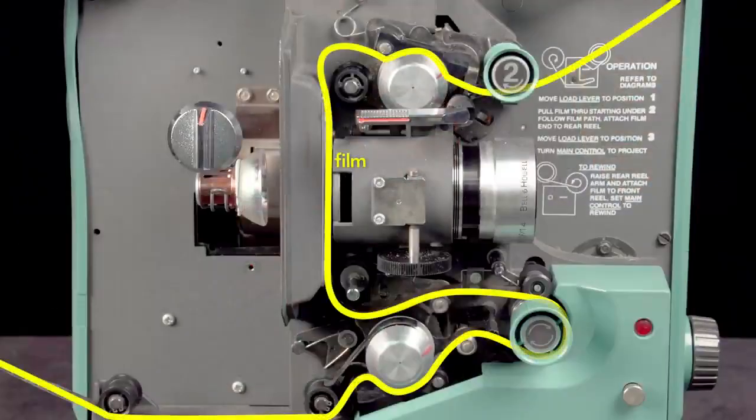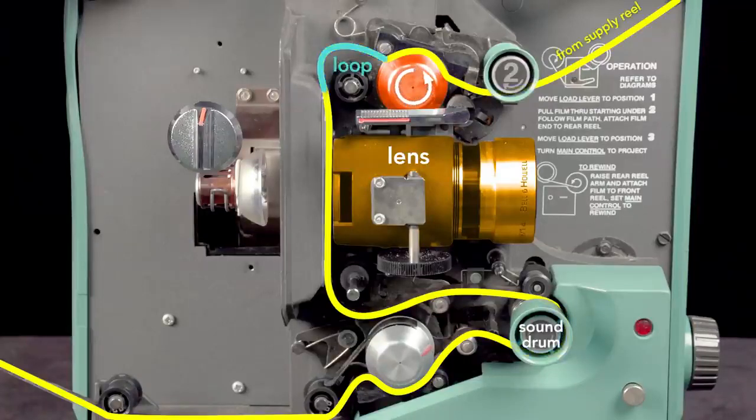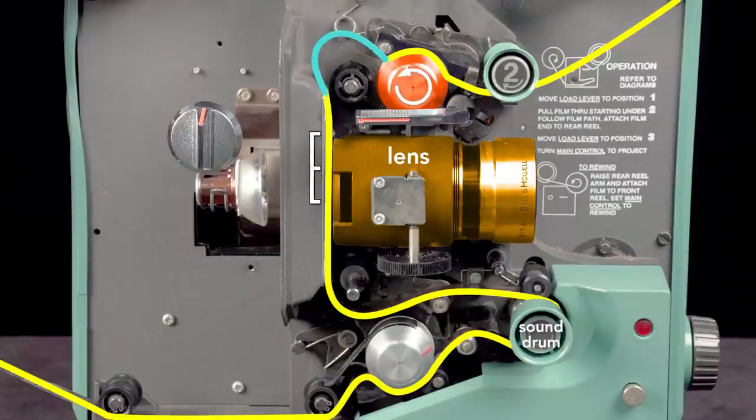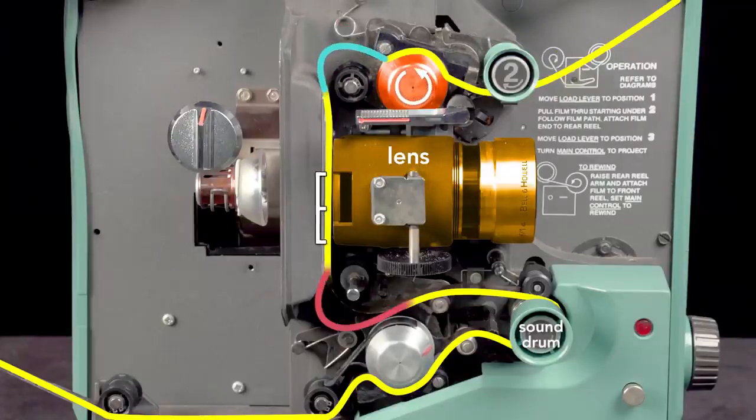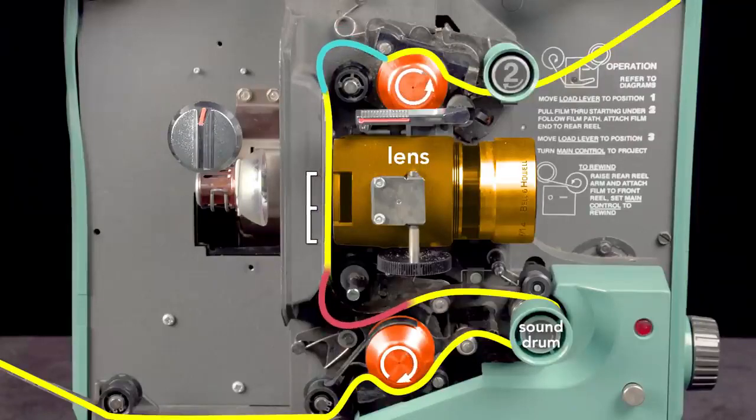The film must pause in front of the lens to project without blur, but must also move continuously for the proper playback of the sound. The top sprocket pulls the film from the supply reel continuously. A loop of slack film starts to form. This slack allows the shuttle to quickly advance to the next frame without tearing the film. A second loop of slack film at the bottom also forms. The bottom sprocket pulls the film continuously. This is important because it allows the sound to be read correctly.